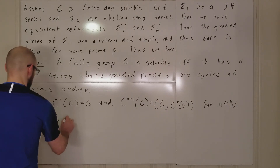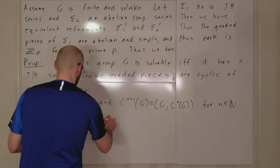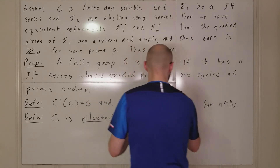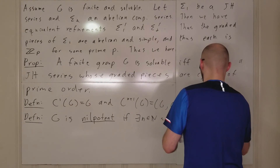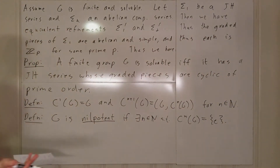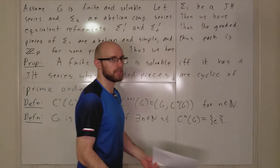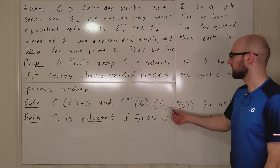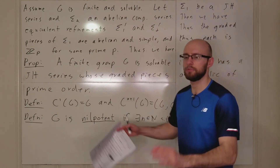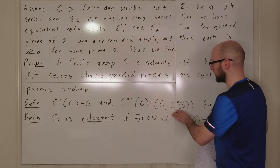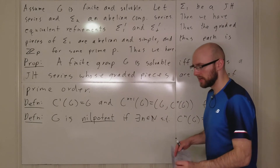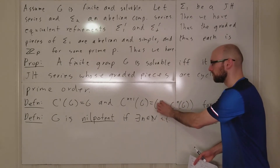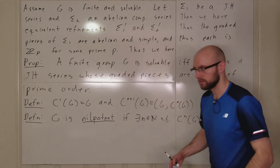Now, we define G is nilpotent if there exists some natural number n such that C^n(G) is trivial. This is sort of like solvability, except we have C instead of D. For D, you take the commutator of the last thing with itself. Here, we're replacing one of those with G — so each C is allowed to include more elements, because you're including all of G in one entry rather than just the previous C^n.